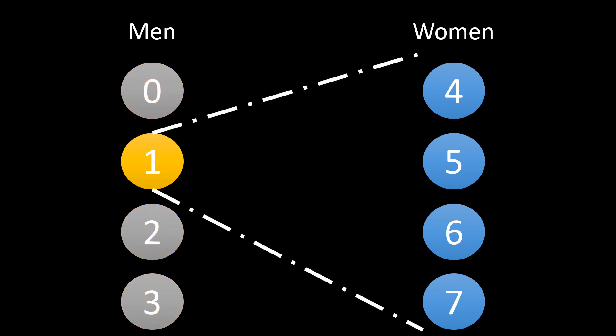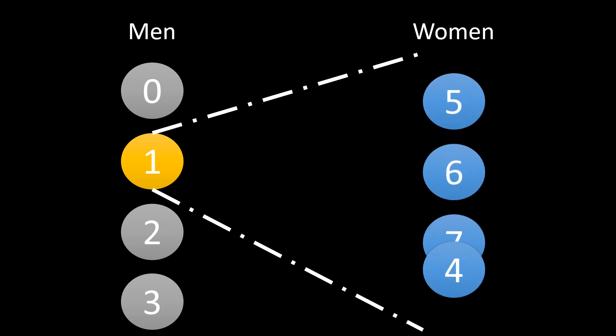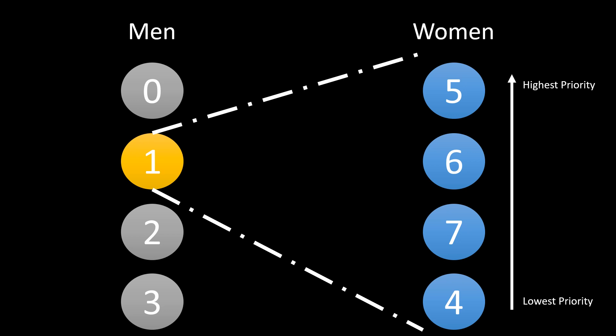Now, for each man, we are given a priority for the woman in which he would likely get married. For man 1, the woman 5 is at the top priority and 4 at the lowest priority. Same priority is given of men too for each woman.